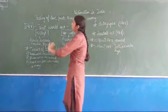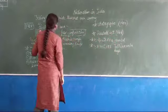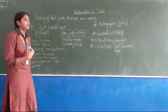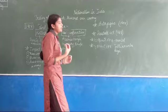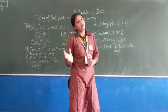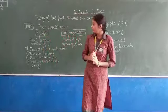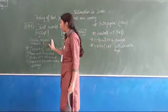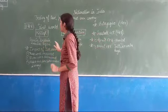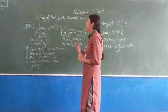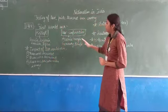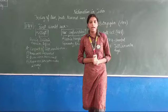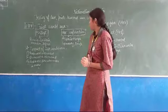Firstly, it was the time of 1914, the First World War, when the Allied Movement and Khilafat Movement were fighting with each other. On one side there were Russia, Britain, America, and Japan. On the other hand, there were Austria, Hungary, Germany, and Europe.